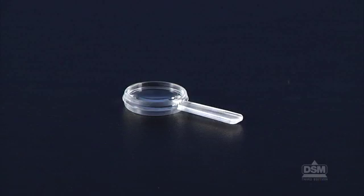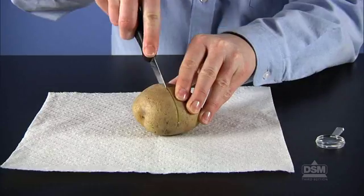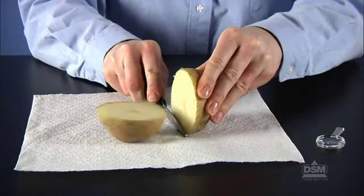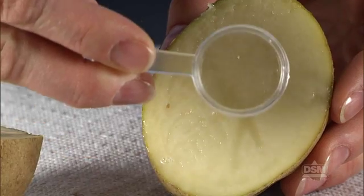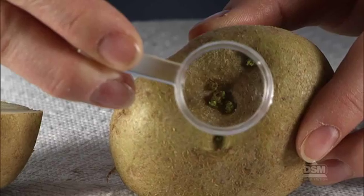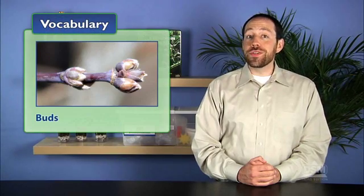Distribute a magnifier to each student. Cut the potato in half and pass the pieces around to give the students a chance to feel the skin, examine the interior of the potato, and examine the eyes. Tell the class that the eyes are buds or the beginnings of new plants.